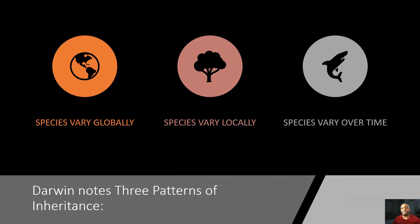During Darwin's many travels and explorations while journeying on the HMS Beagle, he noticed three patterns of inheritance: species vary globally, species vary locally, and species vary over time, and we'll be discussing that next.